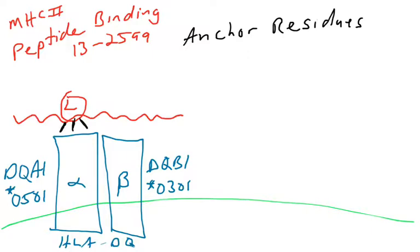So there are amino acids in the alpha chain that interact with a leucine. There are amino acids in the beta chain that interact with the peptide backbone, but not very specific amino acids.